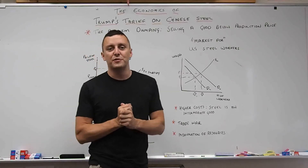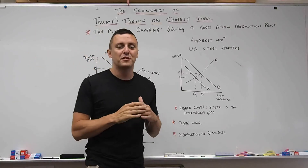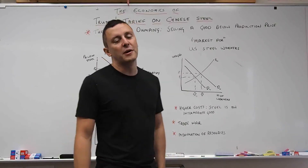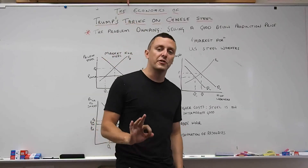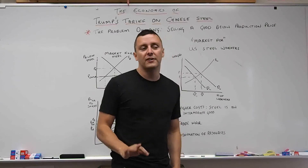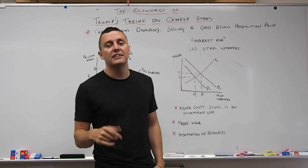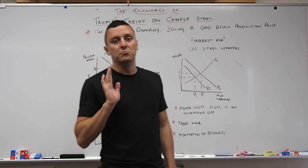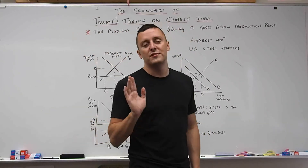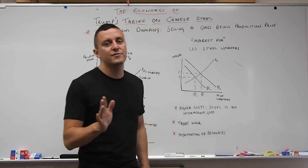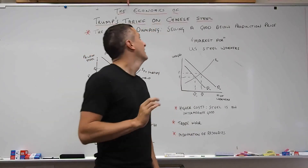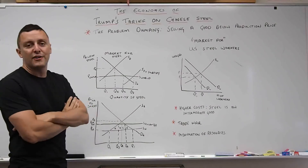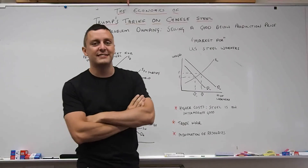As a follow-up to the last video on protectionism, today we're going to talk about a very specific current example. This is very good for your IA in IB economics or an essay in A-level economics. It's all over the news — if you do a simple Google search about tariffs, this will come up. So today we're going to be talking about the economics of Trump's tariff on Chinese steel.